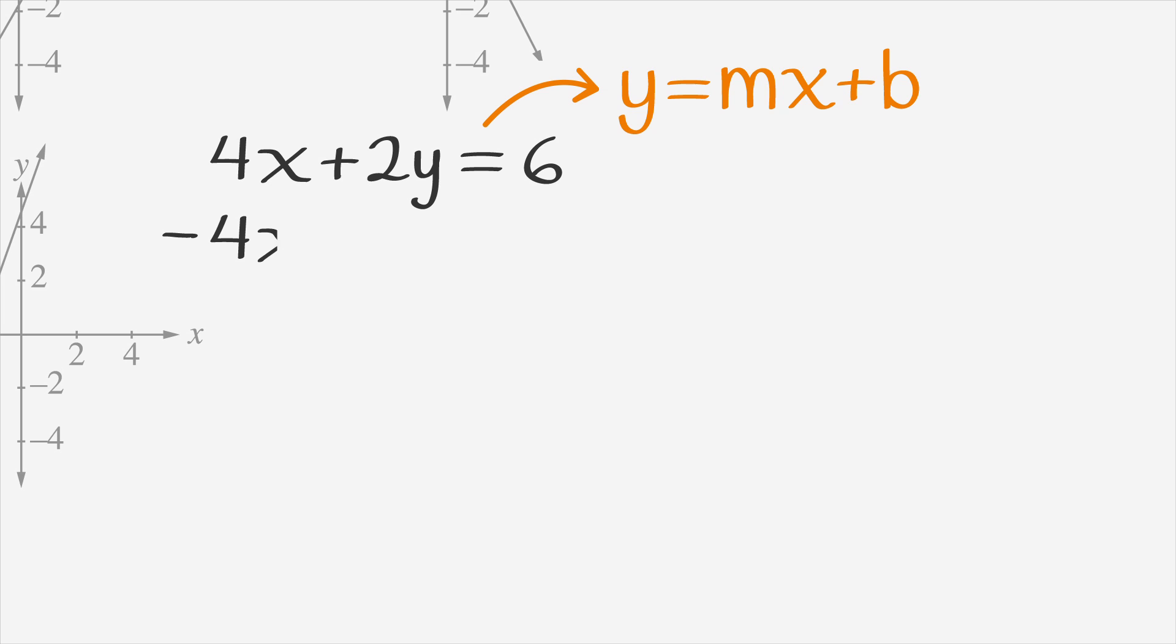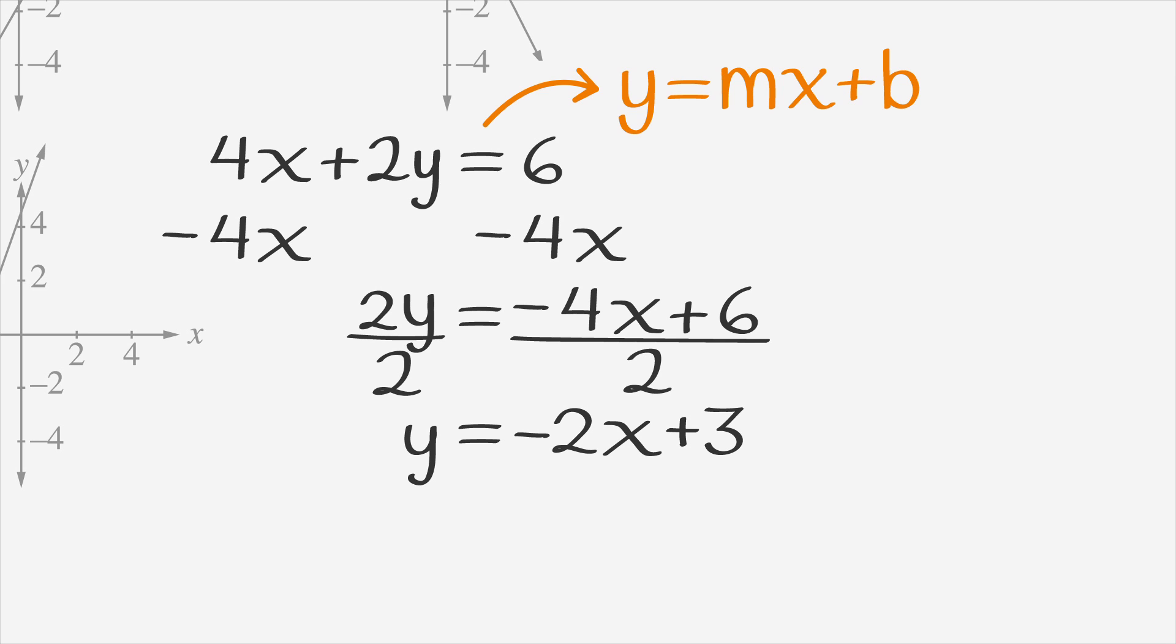First, we subtract 4x from each side. Then, we divide each side by 2 to get y equals negative 2x plus 3. Remember that the slope, m, is the coefficient of x, or what x is multiplied by. In this case, the slope is negative 2, and the y-intercept is 3, the number that's alone.